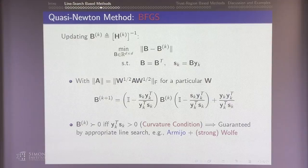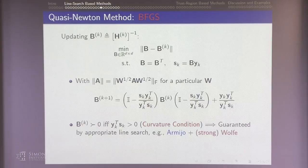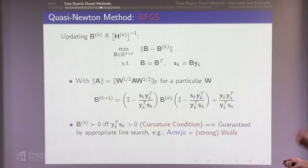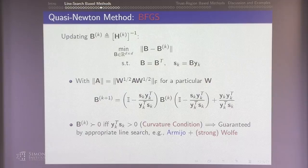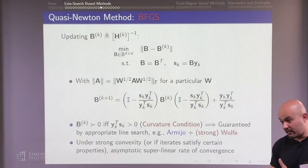For strictly convex problems, the curvature condition is automatically satisfied — it's an implication of strict convexity that the gradient is monotone. For non-convex problems, you ensure the curvature condition by using the Armijo plus Wolfe line search conditions. Armijo guarantees sufficient descent. The Wolfe condition ensures the curvature condition. Under strong convexity assumptions, you can show this method converges with a super-linear rate, the same as the original secant method.